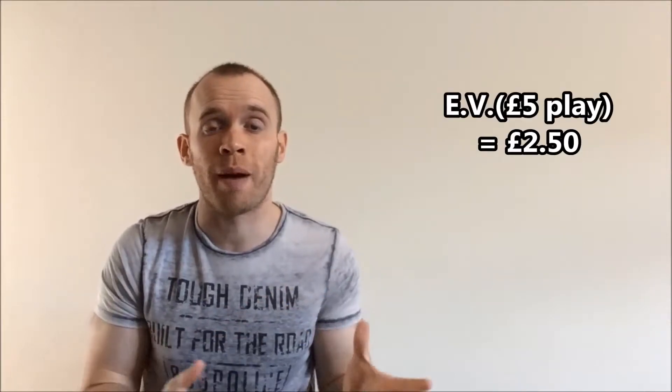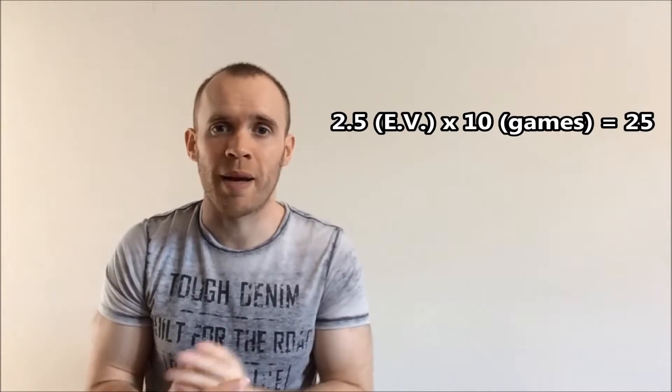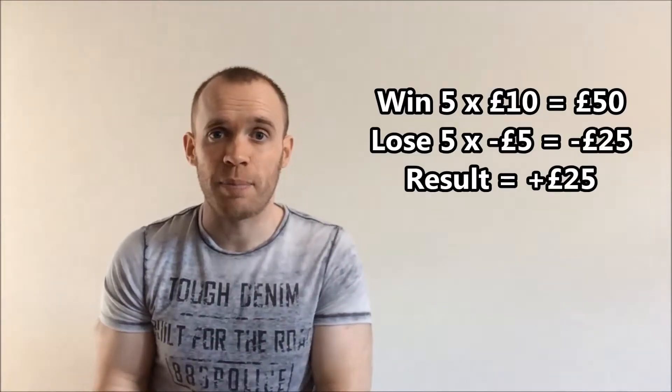In other words, your expected value here is 2 pounds 50. Again, you can't win 2 pounds 50 from one play with a 5 pound bet, but for example if you play 10 times, then your expected value is 10 times 2 pounds 50, which is 25 pounds. That's because the odds dictate you should win 5 times - 5 times 10 is 50 pounds - and you should lose 5 times - 5 times 5 is 25 - and the difference is 25 pounds.